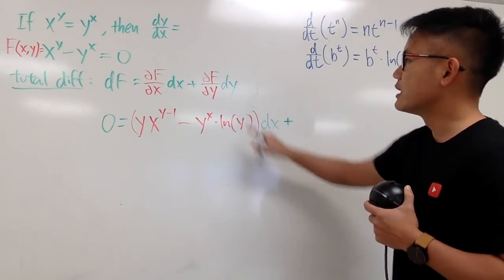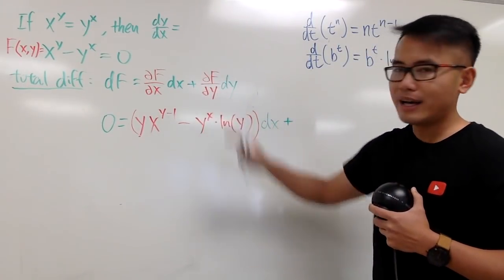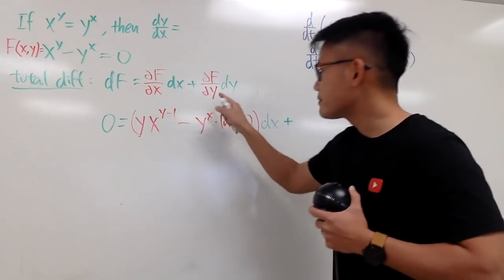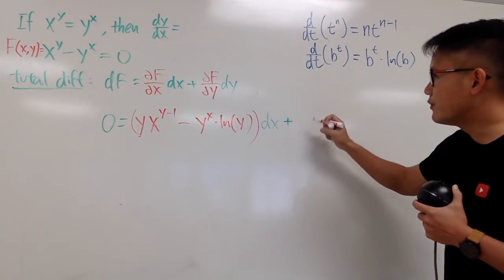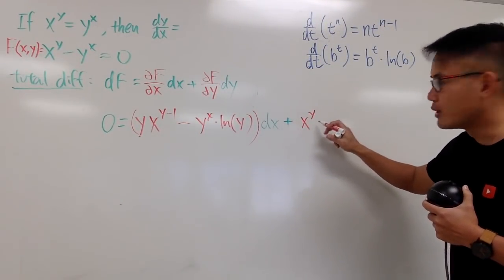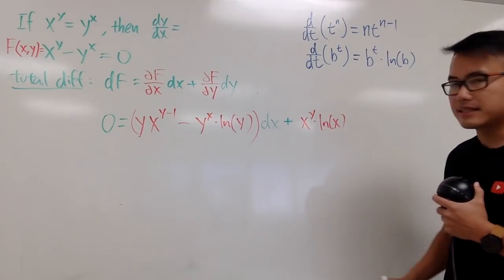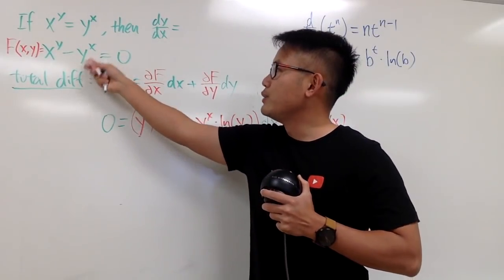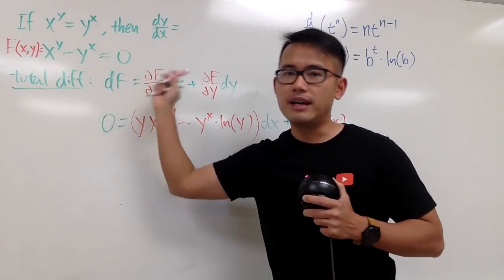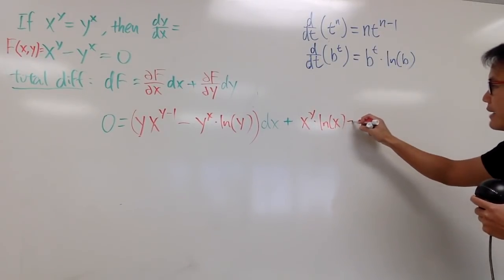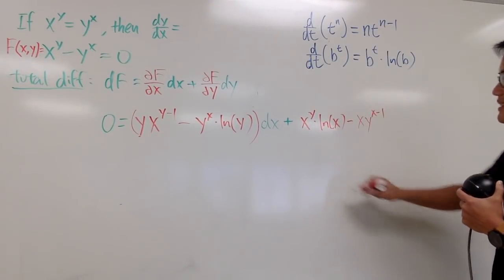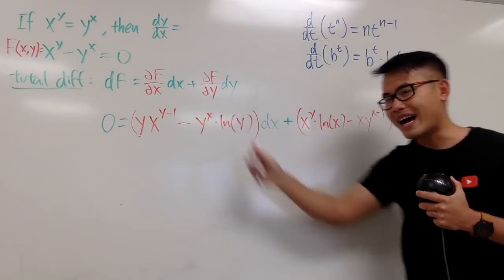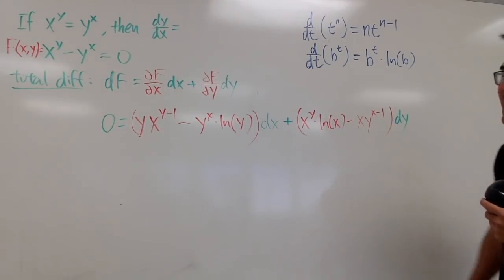Next, we add it with partial f with respect to y. So you pretty much do it backwards. This now is the exponential situation first. You are going to first repeat x to the y's power, but you multiply by ln of the base, which is ln x. And to continue, in the y world, y to the x power, x is the constant, so you bring the x to the front and subtract 1 for the exponent. You get minus x times y to the x minus 1.